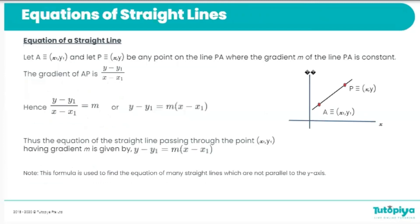Moving on to finding equations of straight lines — one of the most important things is working out the gradient. To work out the gradient we always do the change in Y divided by the change in X. The gradient of a line is usually denoted by the symbol M, so if you see the letter M it stands for the gradient of a line. If we are given the gradient, we can rearrange the equation to find an unknown coordinate if necessary. It's also important to remember that this applies to lines that are not parallel to the Y axis — in other words, lines that are not vertical.